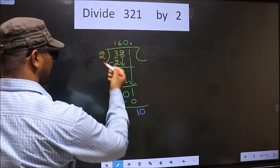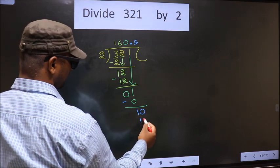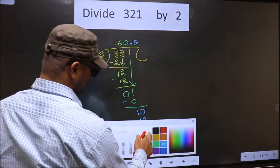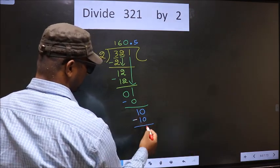So 10. When do we get 10 in the 2 table? 2 5s 10. Now you subtract. 10 minus 10 is 0.